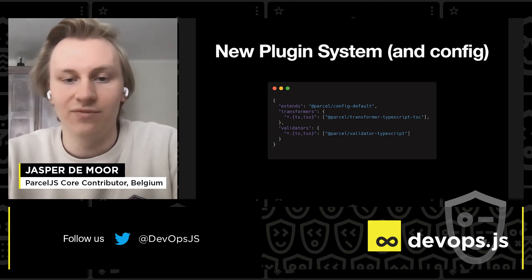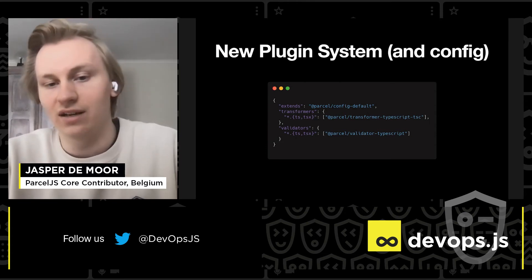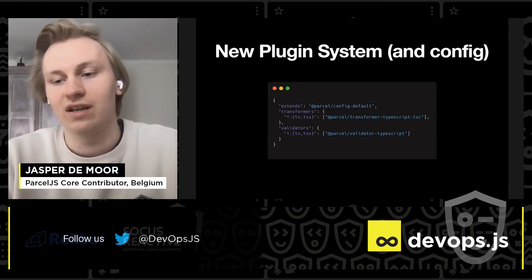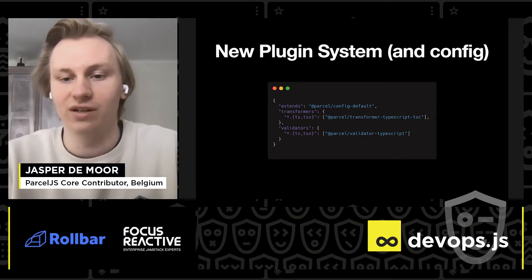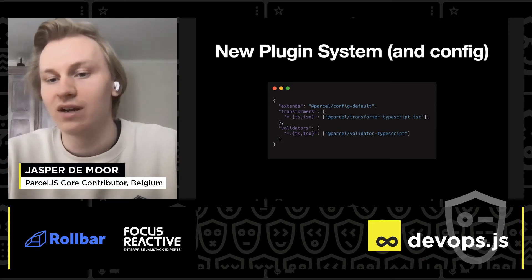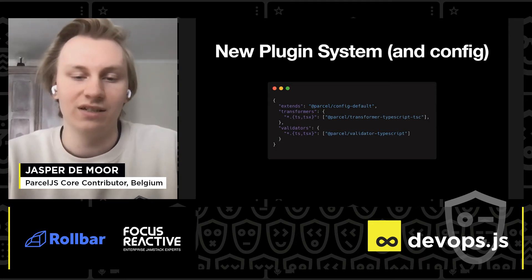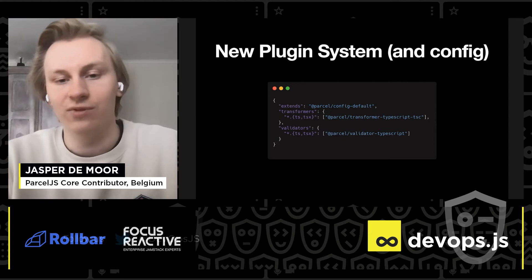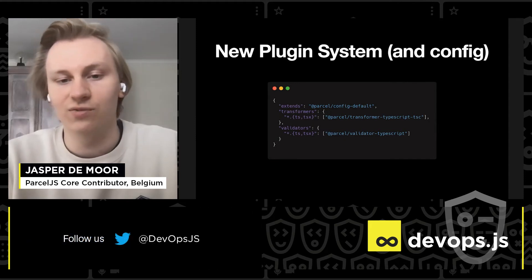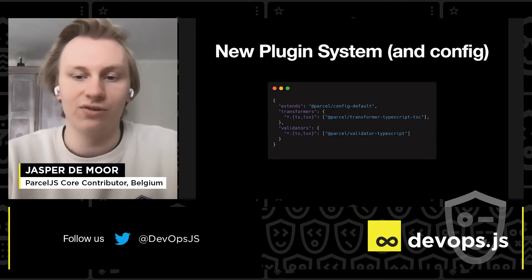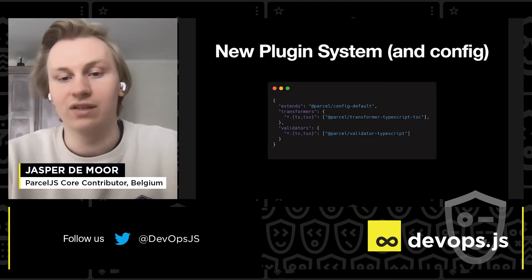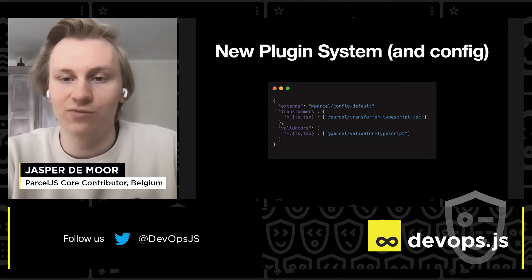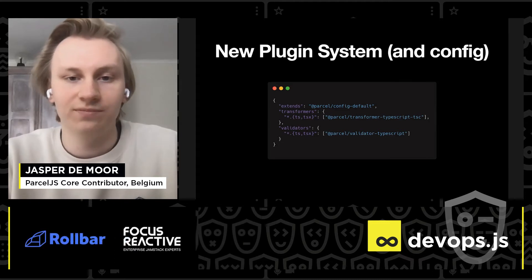For example, we have transformers which take one type of file and convert it into another — for example, from modern JavaScript to legacy JavaScript, or from TypeScript to JavaScript. We also have optimizers which optimize your code or compress it down. For example, we have a Terser optimizer which minifies the JavaScript code.